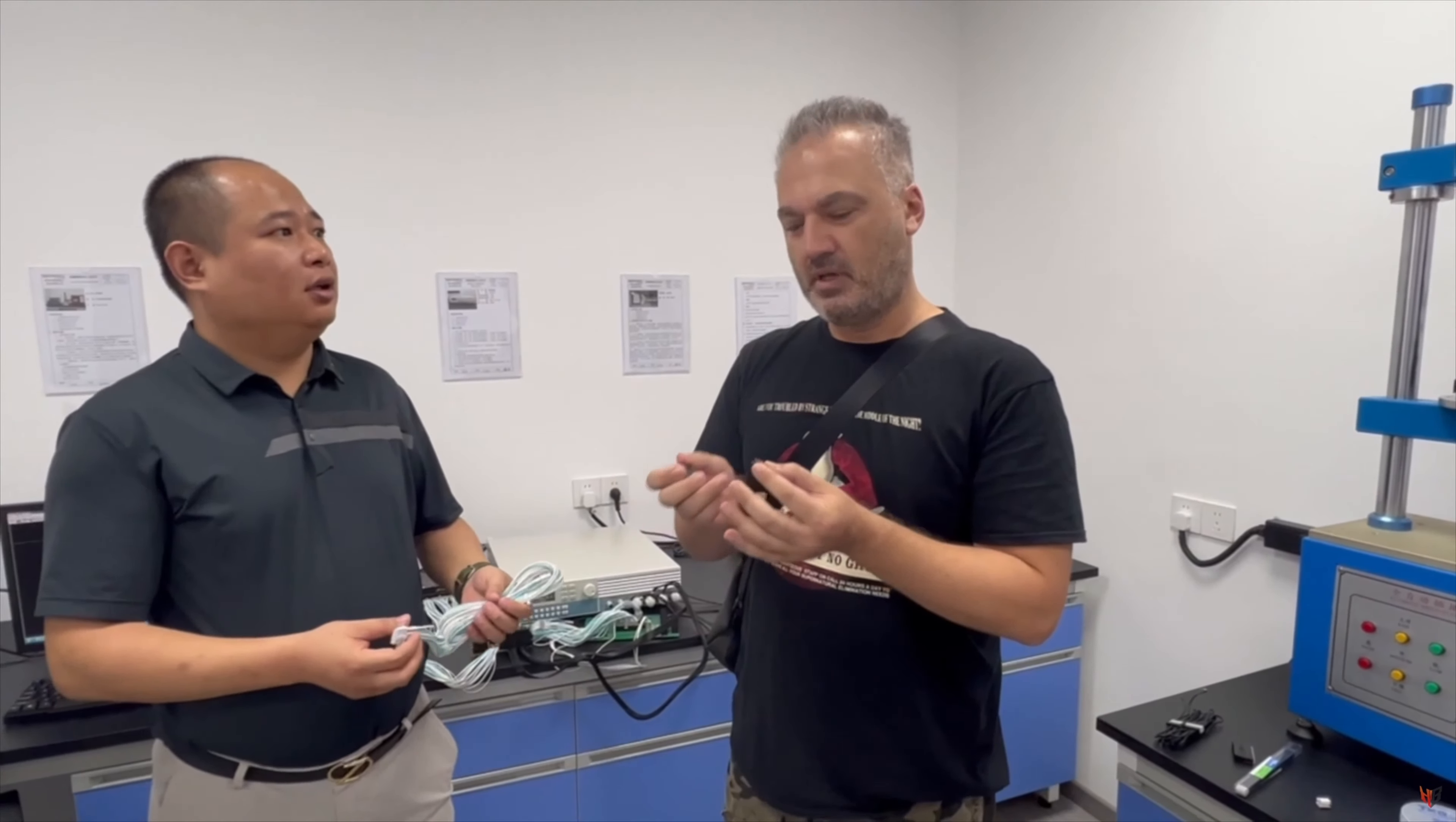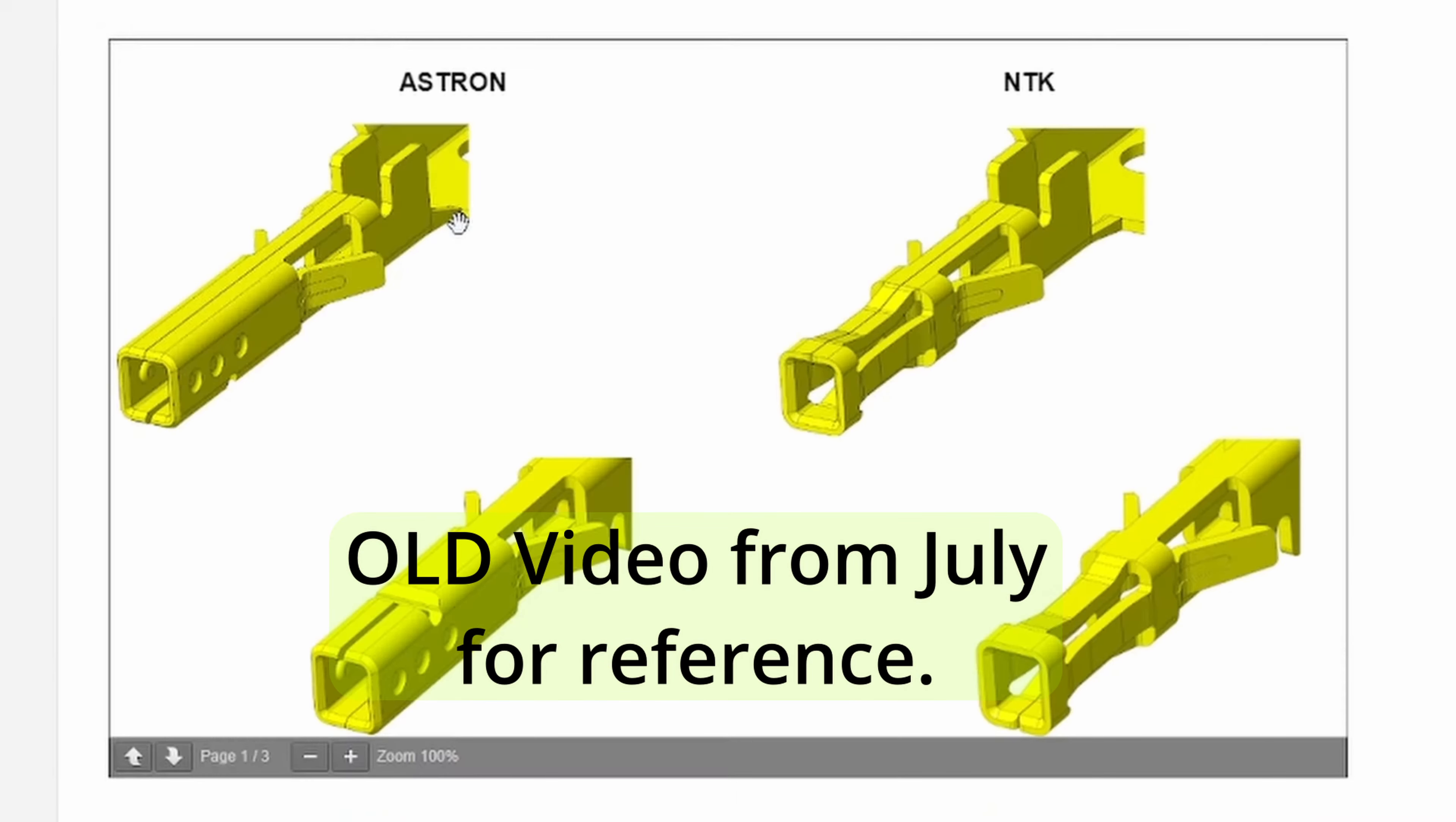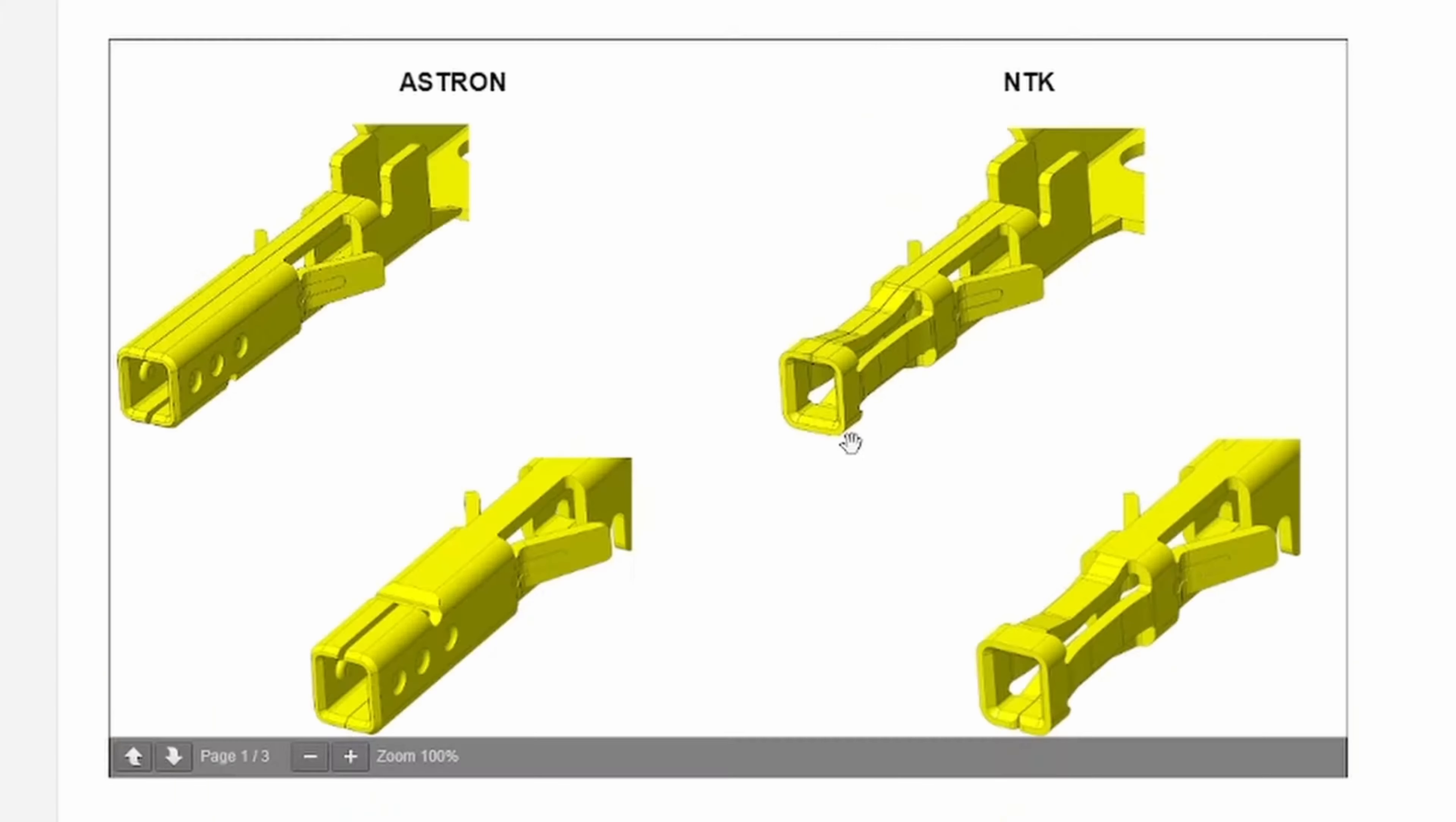It's the older three-dimple style Astron connector that's inside of the actual cable. They want to switch potentially to a new four-spring design that comes from NTK, which has actually been used in the past in other cables and should also help with creating a better connection between the card and the cable itself.